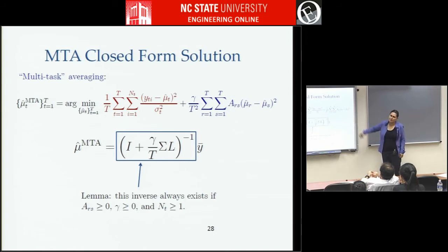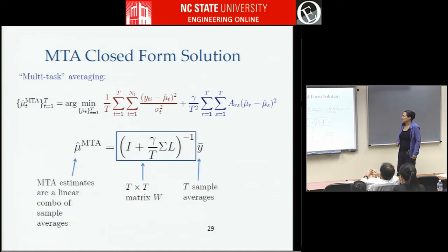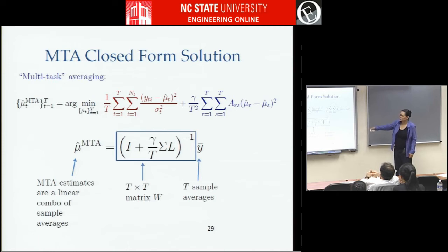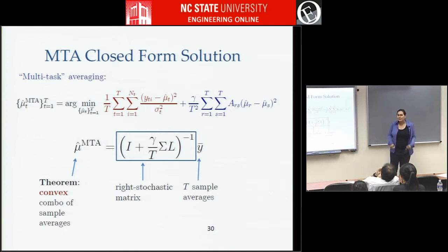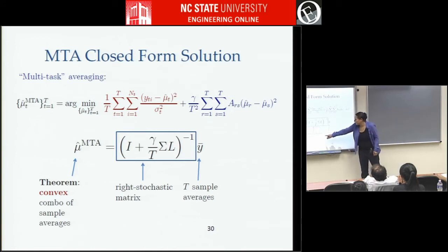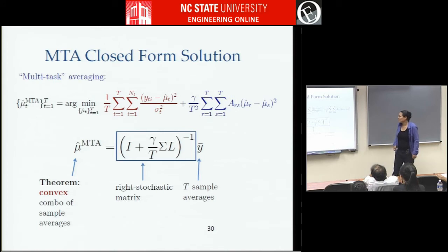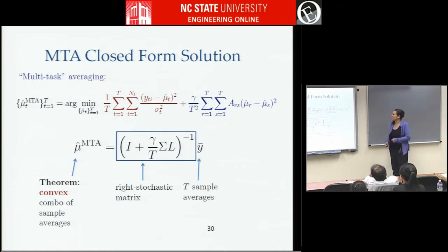The first thing you ask when you see a matrix inverse is: does it even exist? We have a nice lemma showing it exists under essentially all situations. The second thing to note is that these estimates are really just a linear — actually a matrix — multiplication of the sample averages, so we're getting a linear combination of the original sample averages. What's less obvious but provable is that in fact it's a convex combination: all estimates are convex combinations of the original sample averages. This generalizes some related results in graph machine learning and has a tidier proof in the paper.